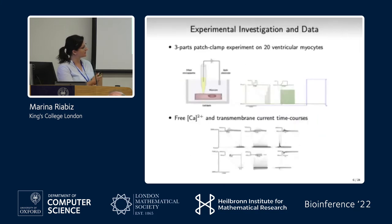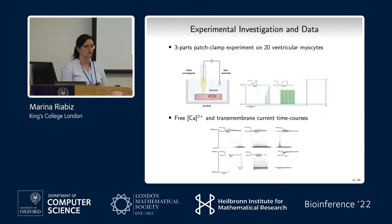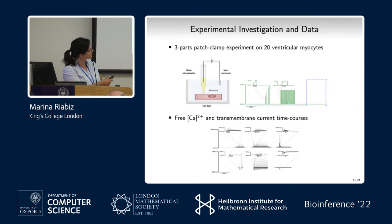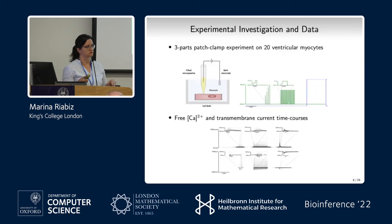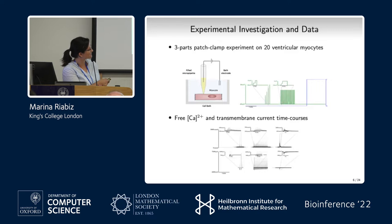We had real data from experiments performed on a number of cells — eventually 18, because two time series were corrupted. The experimental protocol stimulated the cells to enhance system identifiability as much as possible. They used a patch clamp experiment in the first two parts, and then exposed the cell to caffeine, which makes the cell release all its calcium. This is the time series we were working with. I'll be focusing for most of the talk on one time series, then have some remarks on the ensemble.